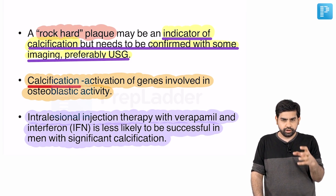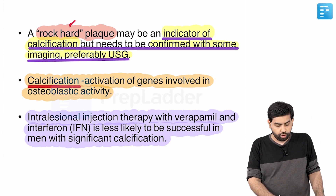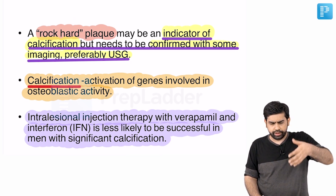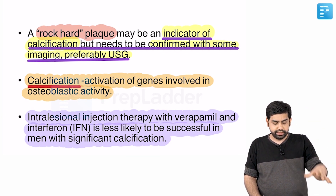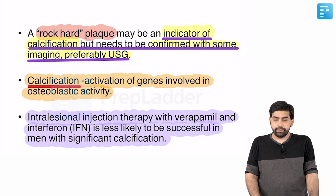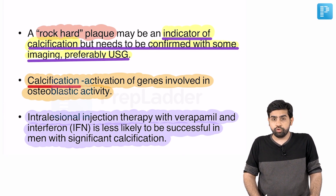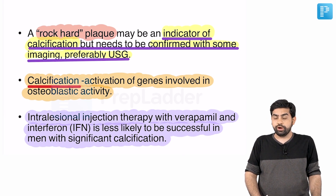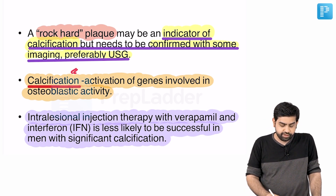The plaques basically feel like a rocky hard structure — they are rock hard. This can be an indicator of calcification. If you are palpating the plaque and rocky hard structures are felt, this is an indicator of calcification. This needs to be confirmed with USG. A tricky exam question: what is the radiological investigation to look for penile plaque calcification? The answer is USG — not CT scan or X-ray.